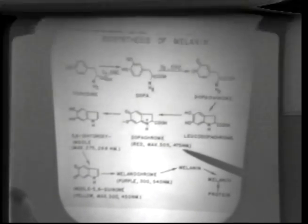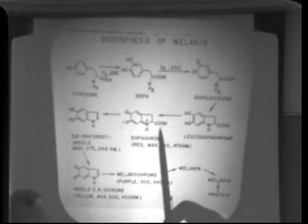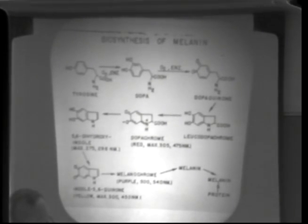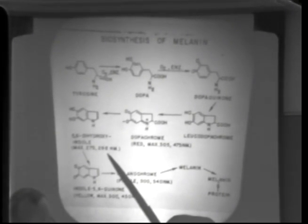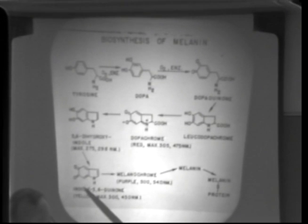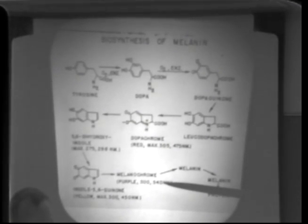Leucodopachrome has an absorption at 475 nanometers and is a red compound in solution. Dopachrome can convert to decarboxylate and form 5,6-dihydroxyindole, which is colorless—basically faint yellow. Then this could oxidize to the 5,6-quinone form, which has an absorption at 450. It oxidizes further in ways not too well known into melanochrome, a purple compound with absorbance at 540.